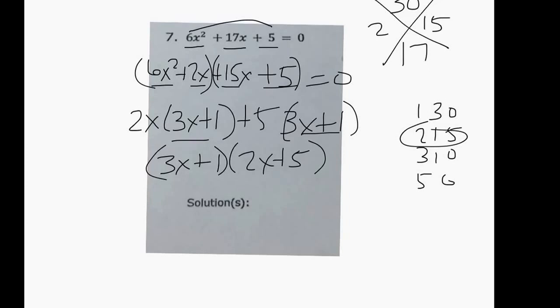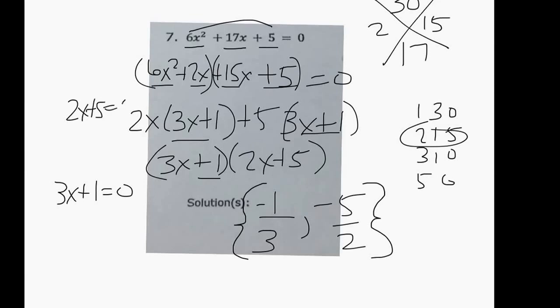And when we look at our answers we do the opposite of 1 divided by 3 and the opposite of 5 divided by 2, and so those are our answers. Remember we could have said equal to 0, 0 and solved. You just move the 5 over divide by 2, move the 1 over divide by 3 and you'll get those answers that I gave you.